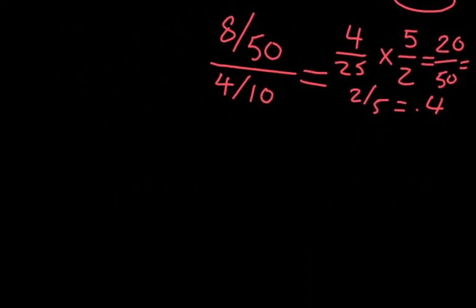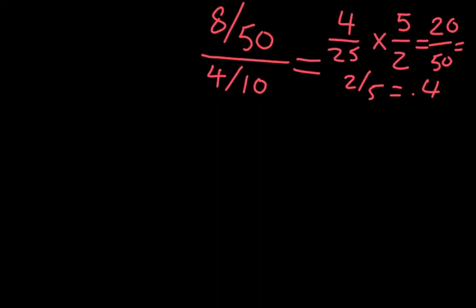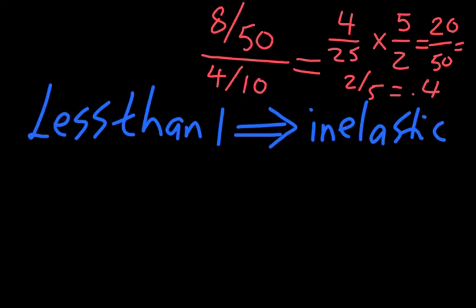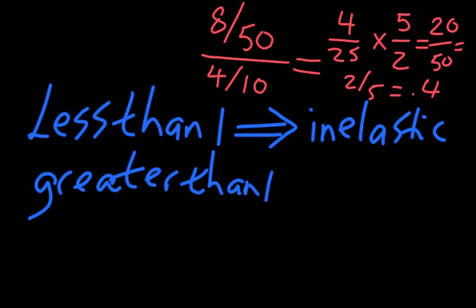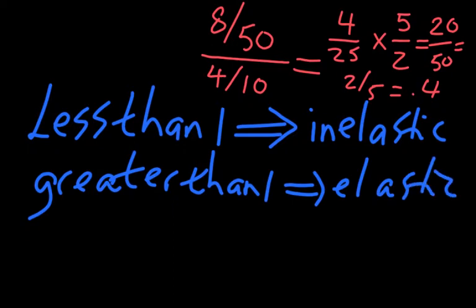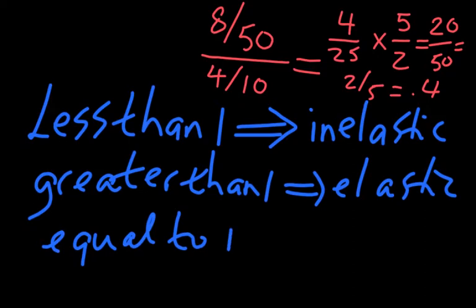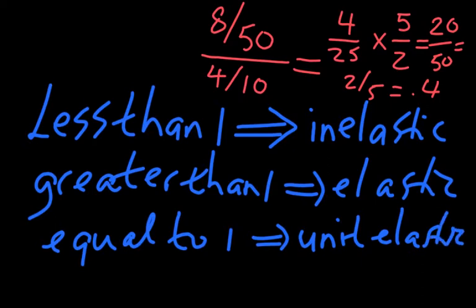Now, what does an elasticity of 0.4 mean? Well, 0.4 is less than 1, so in economics we say that this product is inelastic. If we had gotten a number greater than 1 — say, an elasticity of 2.5 — then we say the product is elastic. And if it happens to be exactly equal to 1, then we say the product is unit elastic. Those are just the definitions.